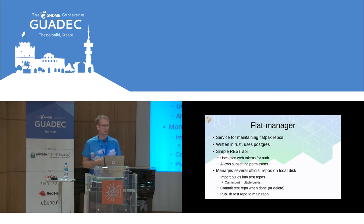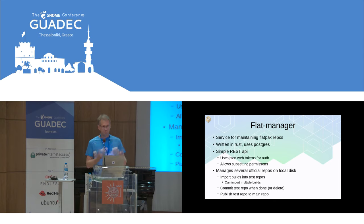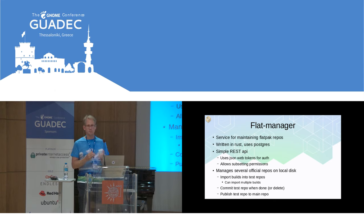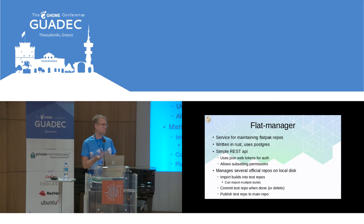You configure flat-manager to maintain one or more repositories on disk, plus there's a separate list of dynamically-created test repositories. The way it works is you create a new test repository, seed all the files to it — typically you have multiple builds so each build gets uploaded. When everything is there you commit the test repository, which turns it into a read-only thing with a correct summary file, so you can use it as a test of your app. If you decide the build is okay you can publish it to the stable repository, or just use it for CI without ever publishing. It will auto-delete old test repos eventually.